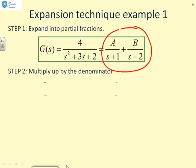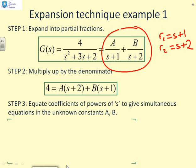Step two, we're going to multiply up by the denominator. Now in this case, the denominator, if I write it, we've got r1 equals s plus 1, r2 equals s plus 2. So we're going to multiply up by s plus 1 times s plus 2. So there we go. And what do we get? We get 4 equals A times s plus 2 plus B times s plus 1.